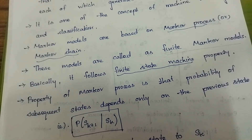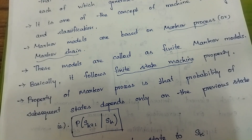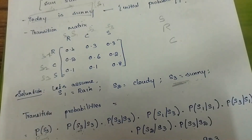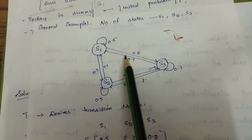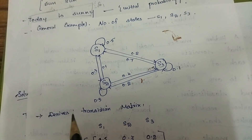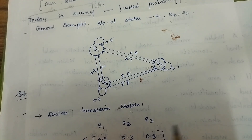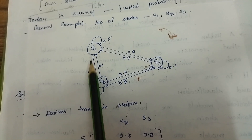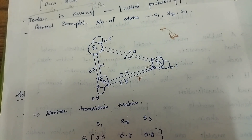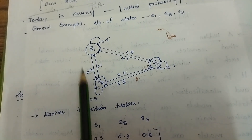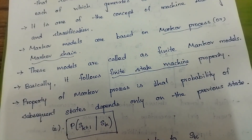A finite state machine is a mathematical model of computation that can be in exactly one of a finite number of states at any given time. It can change from one state to another in response to some inputs — this change is called a transition.